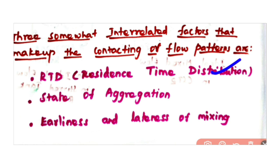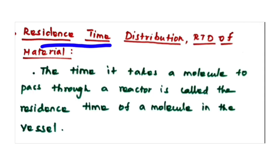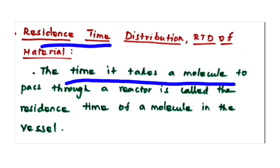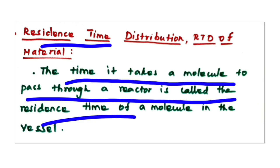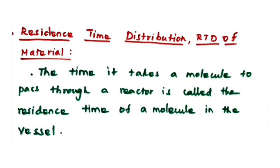First, let us see about residence time distribution. Residence time is the time it takes a molecule to pass through a reactor. How much time a molecule spends inside the reactor is known as its residence time.